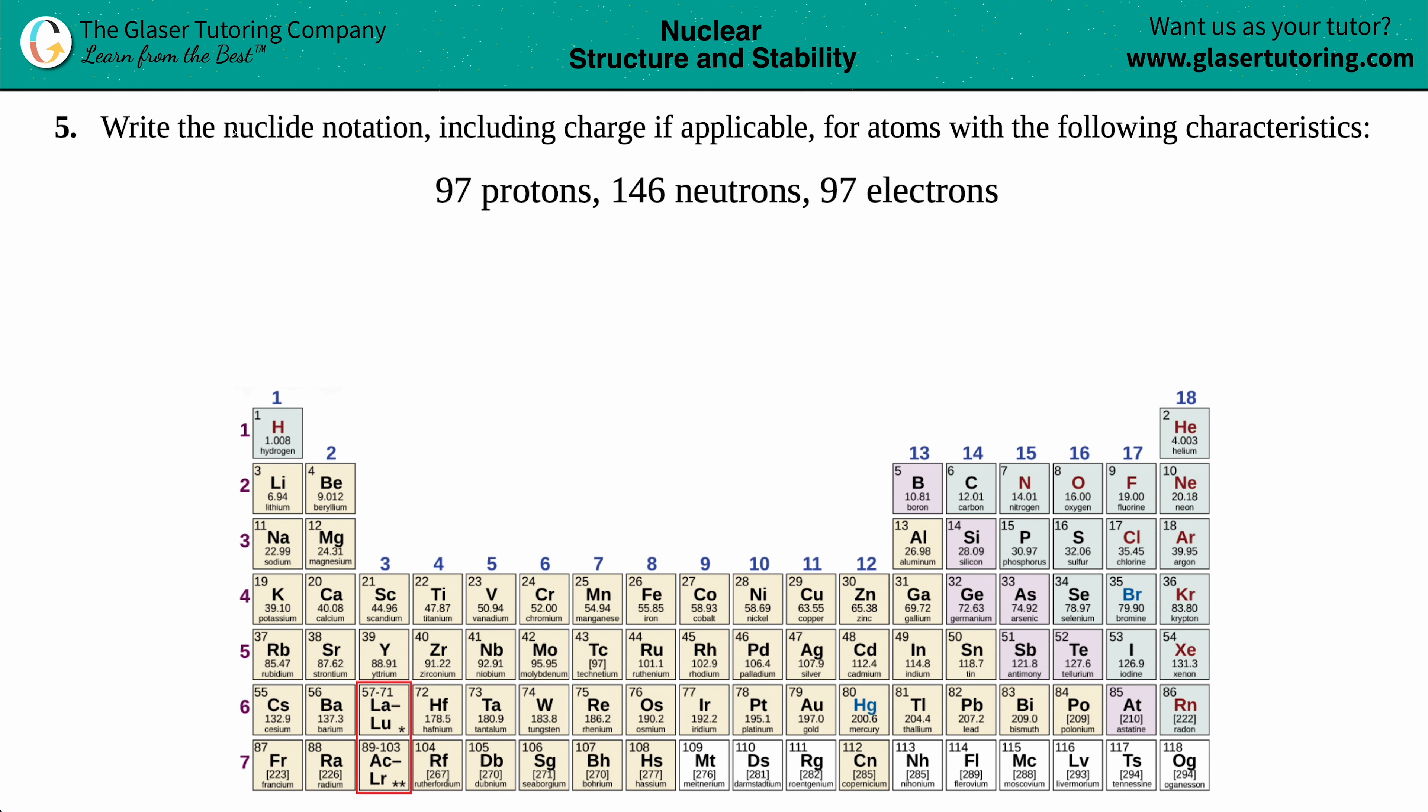Number five, write the nuclide notation including charge if applicable for atoms with the following characteristics. And then we have our example here. So we have to write a nuclide notation with 97 protons, 146 neutrons, and 97 electrons.